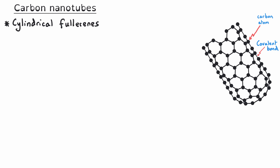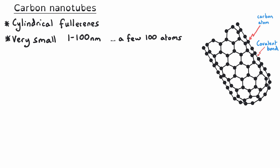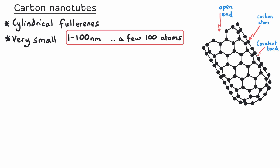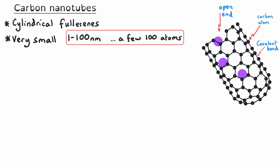Carbon nanotubes are a cylindrical type of fullerene, and as their name suggests, they are very small — around 1 to 100 nanometres across. They are made up of a few hundred atoms in a hollow tube arrangement. The nanotube will either be open at one end or both ends, and as a result, they allow tiny amounts of fluids and materials to pass through them.